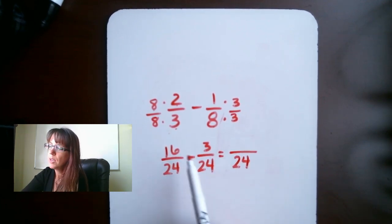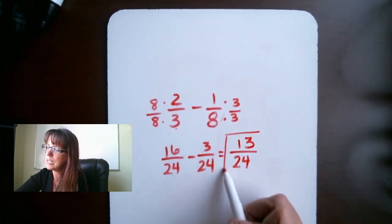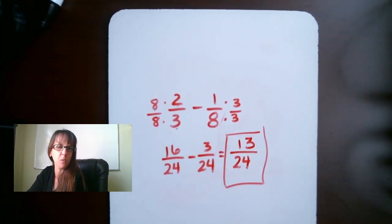What we've got is that 24. Then we have 16 minus 3 gives us 13. Excellent. If you got 13 out of 24, that is the correct answer. 13 is a prime number, can't reduce this at all, so that's your answer. Good work.